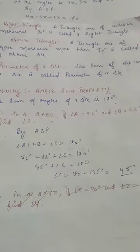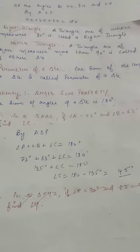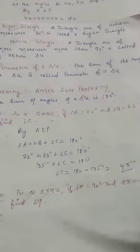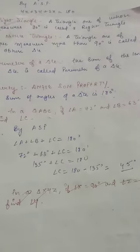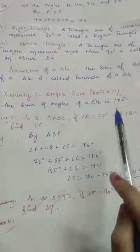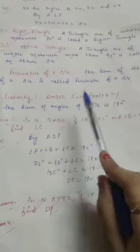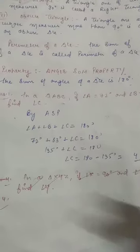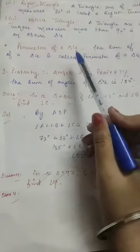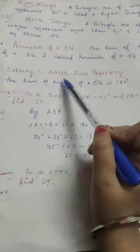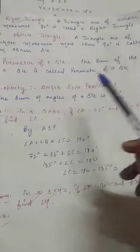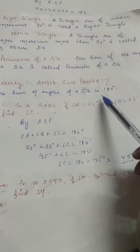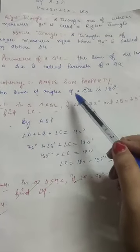So that was the previous basic definitions which you always need to know from 5th class — types of triangles and perimeter. Now in 7th class the new topic is: Properties of Triangles. The sum of the angles of a triangle is 180 degrees, which you probably learned in 6th class.